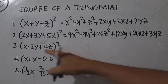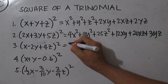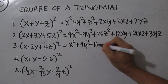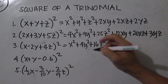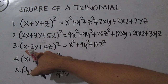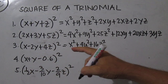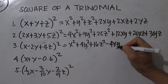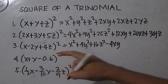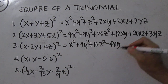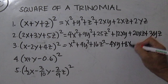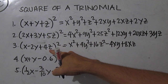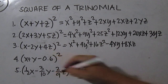For number 3, you have x squared plus 4y squared plus 16z squared. Then x times negative 2y is negative 2xy times 2 is minus 4xy. Then x times 4z is 4xz times 2 is 8xz. Then negative 2y times 4z is negative 8yz times 2.